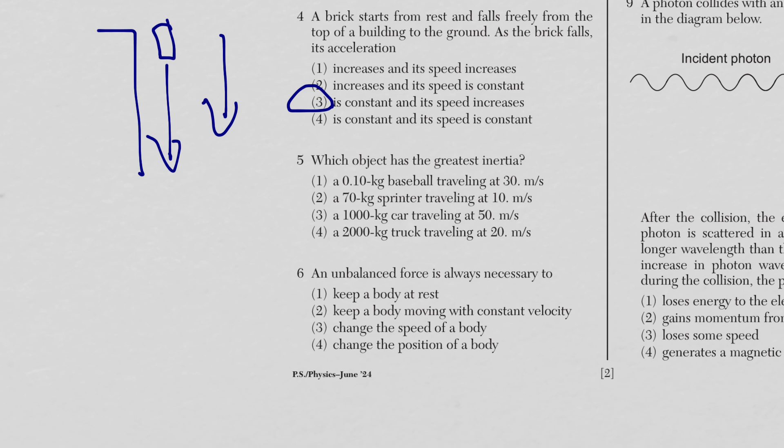For question five, which object has the greatest inertia? Don't look at velocity — inertia has everything to do with mass. The object with the greatest mass is the truck, so that's the answer.